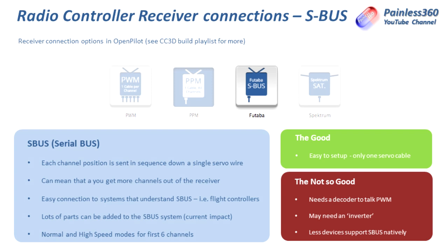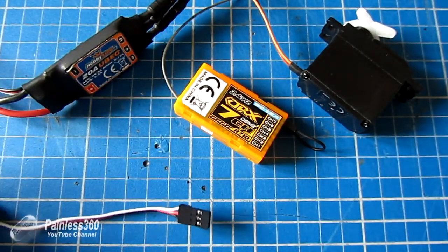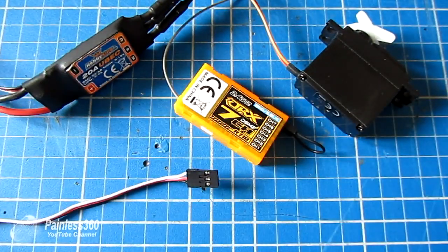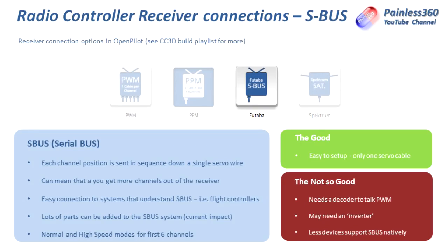SBUS can give you more channels out of the receiver — the number of channels is limited by the transmitter not the receiver technology, which can be very useful. There's also a standard and high-speed mode for the first six flight channels, allowing really fast response times. Just like PPM, you only have one cable, making the connection simple. The bad news is that if you want to connect to a servo or speed controller, you'll need a decoder to convert the SBUS signal into PWM.